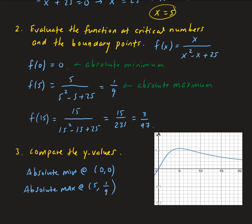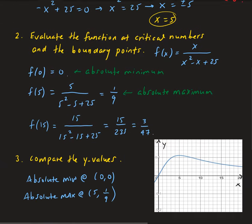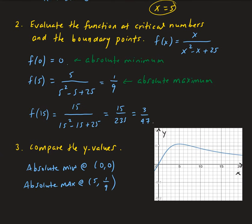Looking at the graph of the function between 0 and 15, we can see the absolute minimum at the origin — that is the point (0, 0) — and the absolute maximum at x equals 5 with a value of 1/9, which appears as the highest point on the curve in this interval. So the absolute minimum is at the origin and the absolute maximum is at (5, 1/9).